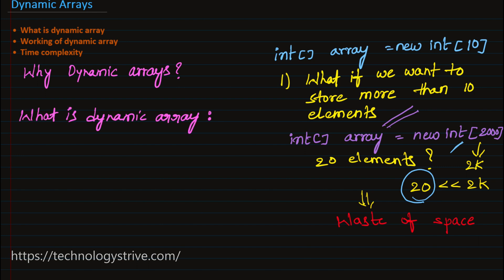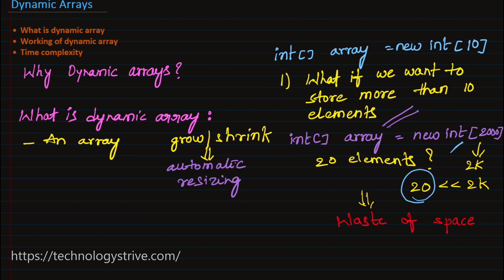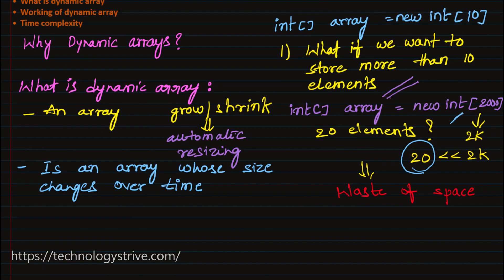So what is a dynamic array? It is an array with an improvement: it can either grow or shrink in size whenever required. This is also called automatic resizing. The definition is: a dynamic array is an array whose size changes over time. Most programming languages already support dynamic arrays — in Java it's ArrayList, in Python it's list, and in C++ it's vector.